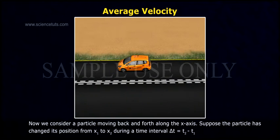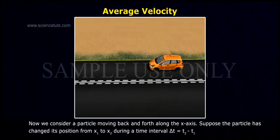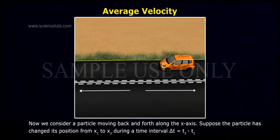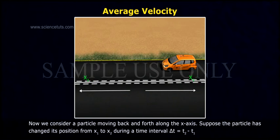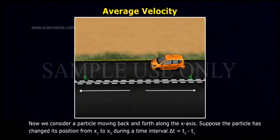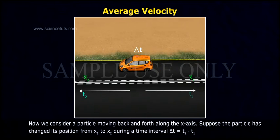Average Velocity. Now we consider a particle moving back and forth along the x-axis. Suppose the particle has changed its position from x1 to x2 during a time interval delta t equals t2 minus t1.